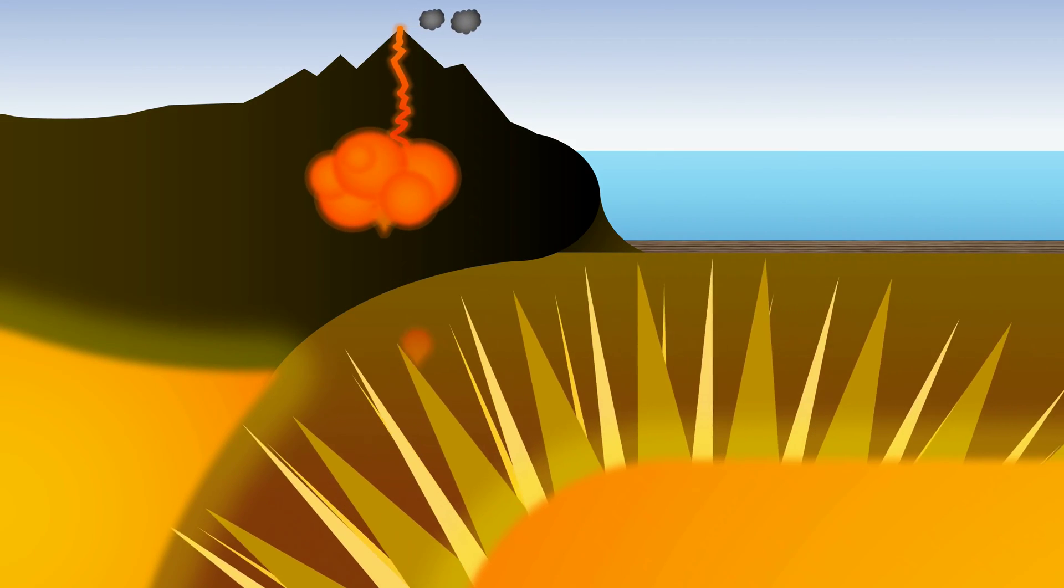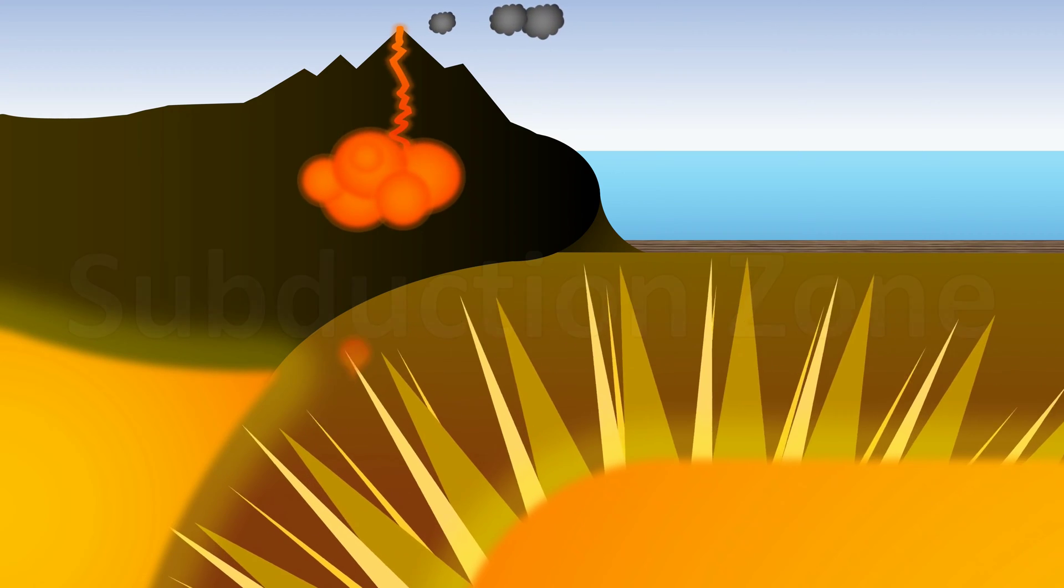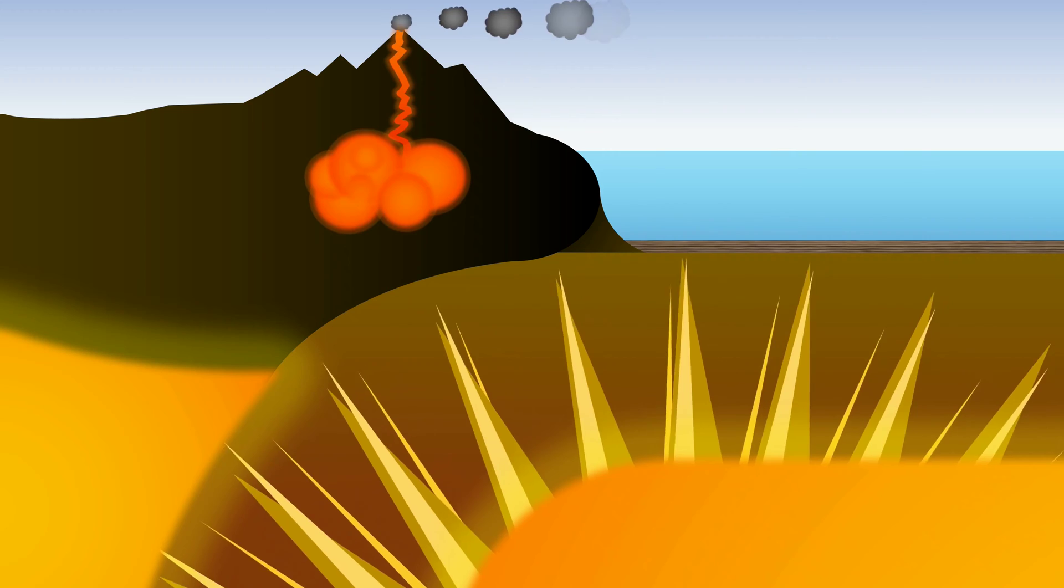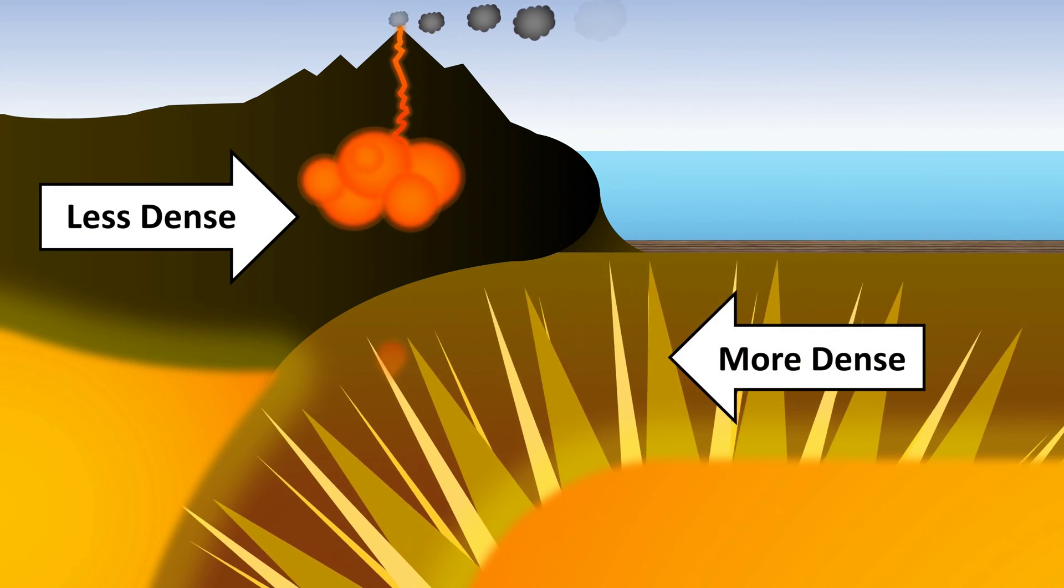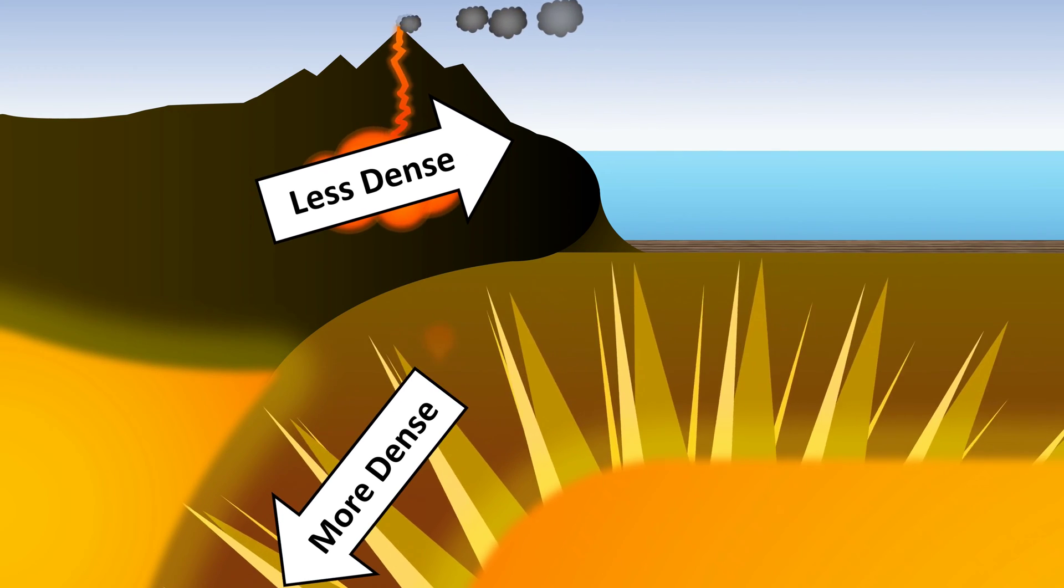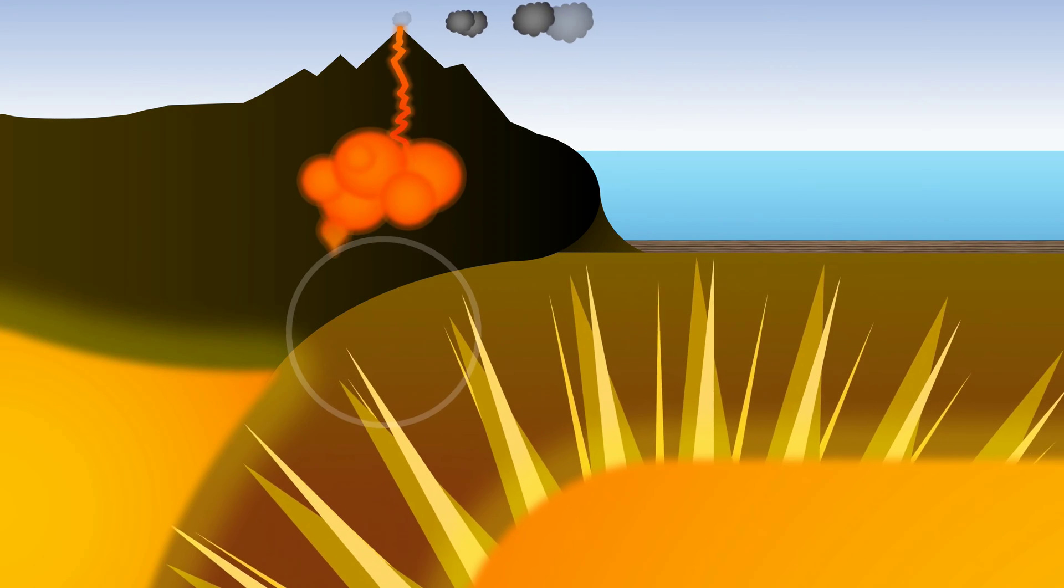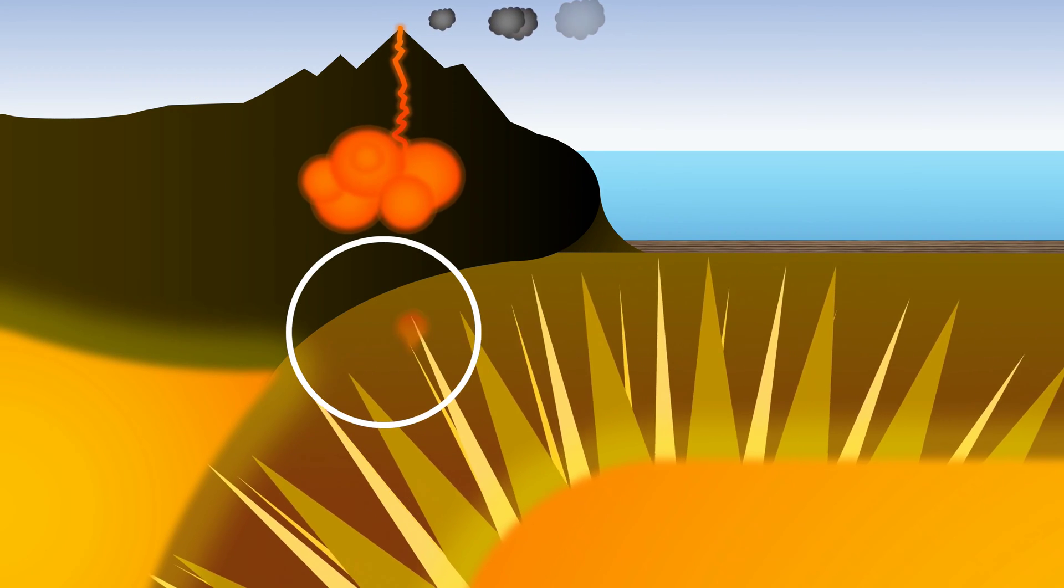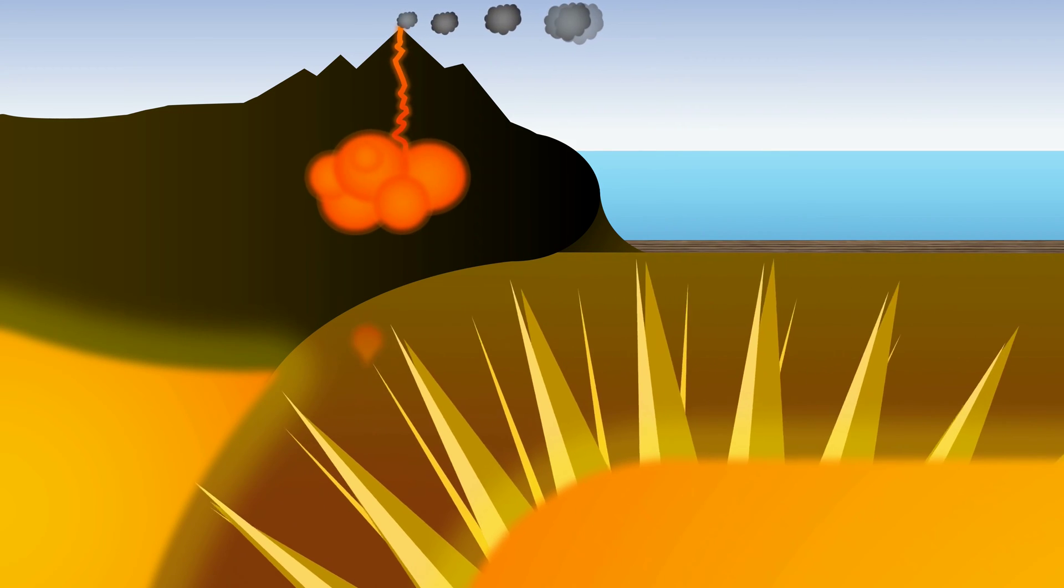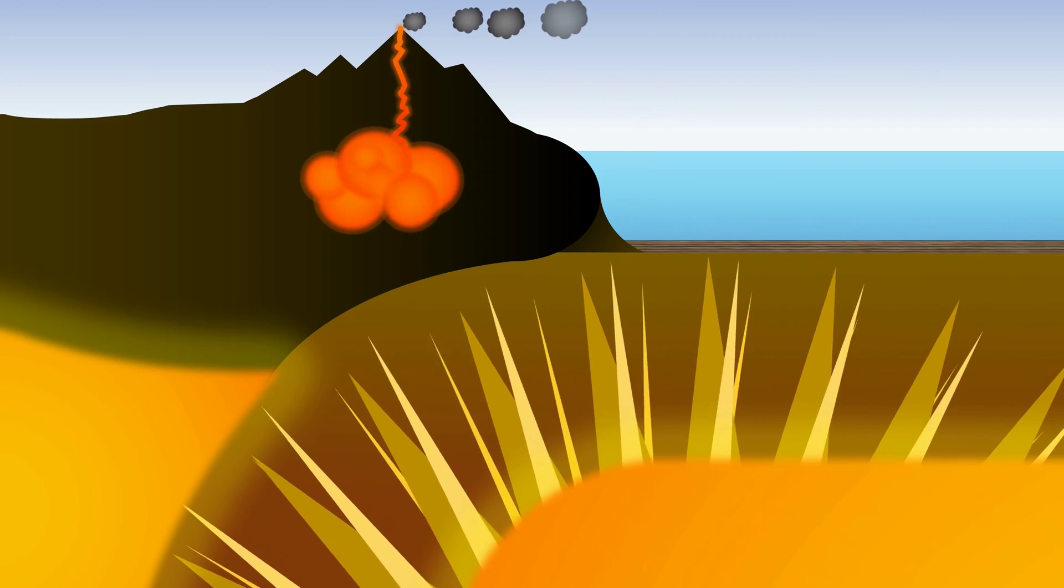One of the best places on Earth to find these conditions is called a subduction zone. A subduction zone is a place on Earth where two tectonic plates, huge slabs of rock, are converging. One plate is denser than the other, and this causes that plate to sink beneath the less dense plate. The subducting plate melts in some places, producing magma, which rises in plumes to produce volcanoes in the overriding plate. All these different heat and pressure conditions provide a perfect place to find lots of different kinds of metamorphic rocks.